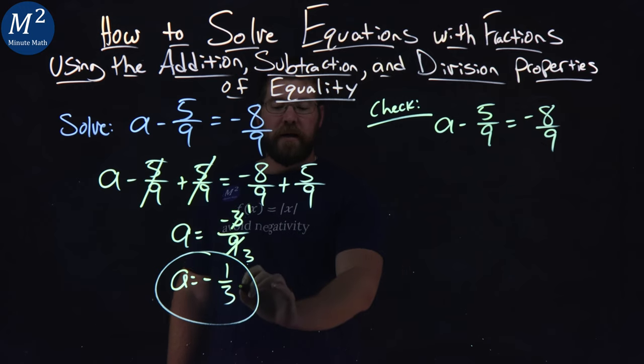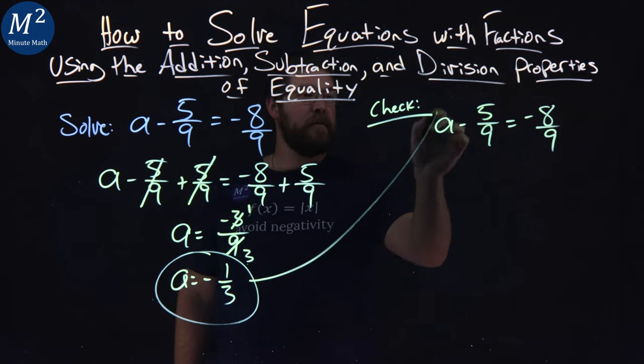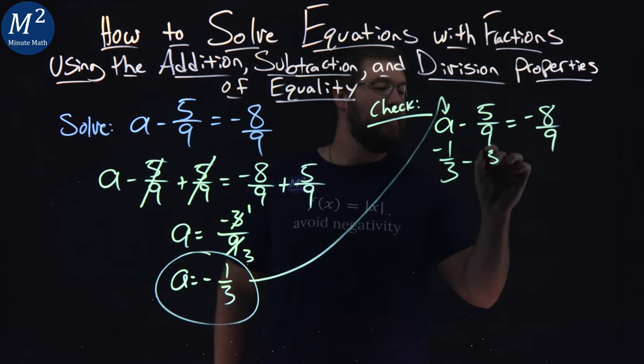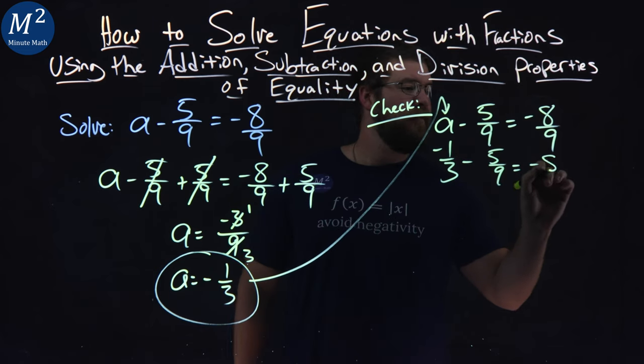We want to plug in our negative 1/3 in for a. Negative 1/3 minus 5/9 equals negative 8/9.